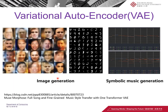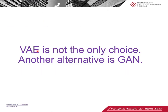Here are real examples generated by VAE from papers. You can see those images are kind of blurry — even though it's impressive that we can generate examples, and it could be used for music generation as well, the quality is not that satisfactory. In fact, VAE is not the only option — there are alternatives like GAN, which is also really popular.